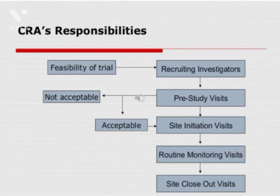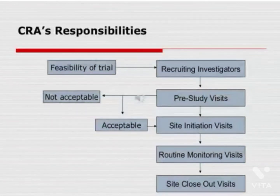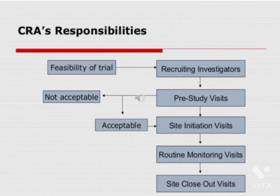Here is the flowchart explaining how a CRA does their work. The first step is feasibility of the trial. Depending upon the feasibility, the CRA recruits investigators who should be qualified by training or experience and should have adequate resources to properly conduct the trial. After recruiting the investigator, there will be pre-study visits on the site and routine monitoring visits, whose purpose is to check whether the reported data is accurate, complete, and verifiable from source documents. If everything goes well, a site closeout visit is conducted and final IP accountability is done.